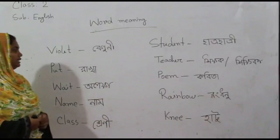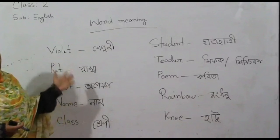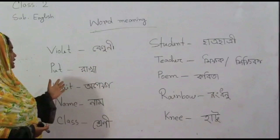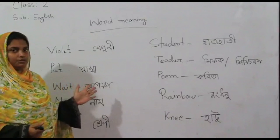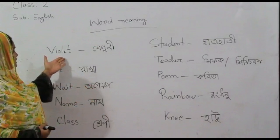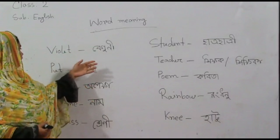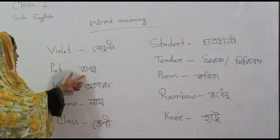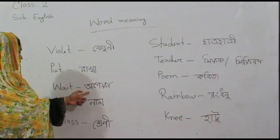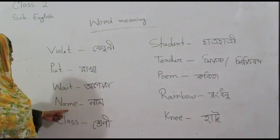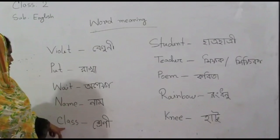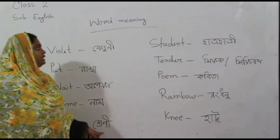आज क्यामरा एद दोस्टा word meaning शिर्गों। भारत means बेगुनि, पूप means राखः, वड़ मीश अवेक्छा, नेव मीश नाम, ग्राश मीश च्रेणी।